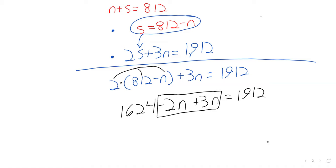A negative 2n and a positive 3n gives us a positive n. So, just solve for n. We subtract 1,624. Does anyone have a calculator or can anyone do that real quick for me? Thank you.